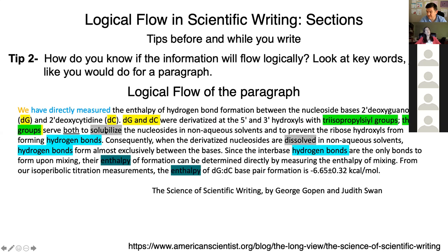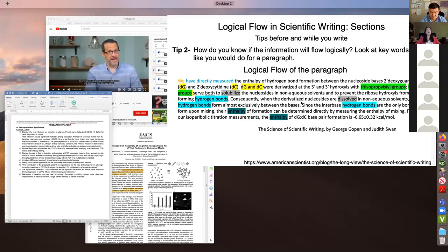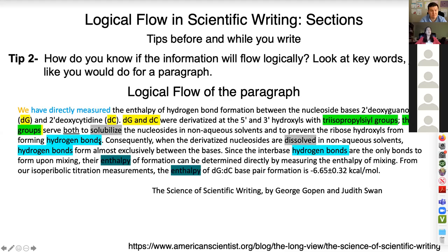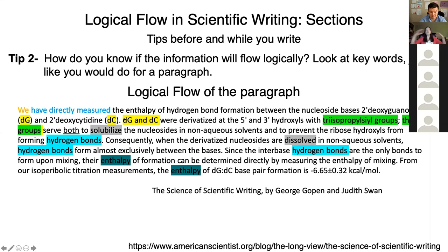Those groups, referring back to triisopropyl silyl groups, appear in the third sentence. The third sentence has the word 'solubilize,' and the fourth sentence includes 'dissolve,' which are of course similar. Likewise, hydrogen bonding was in the third, fourth, and fifth sentences to link all of those sentences. And finally, the word 'enthalpy' is in the fifth and sixth sentences. DG and DC really relate back to the original sentence. There's a relationship between each sentence made clear because key words are found similarly in sentences next to each other.